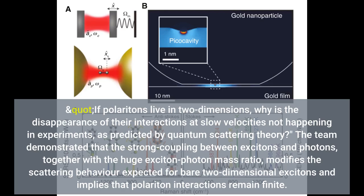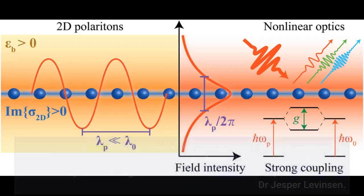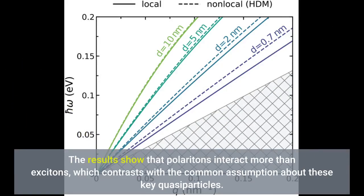The team demonstrated that the strong coupling between excitons and photons, together with the huge exciton-photon mass ratio, modifies the scattering behavior. More precisely, they showed that the regime where the interactions should vanish is not observable since it would require a sample much larger than the known universe. The results show that polaritons interact more than excitons, which contrasts with the common assumption about these key quasiparticles.